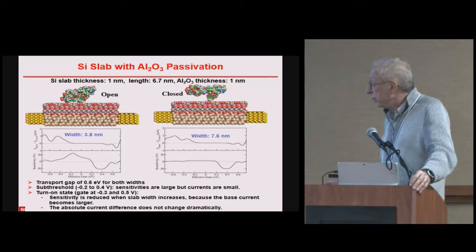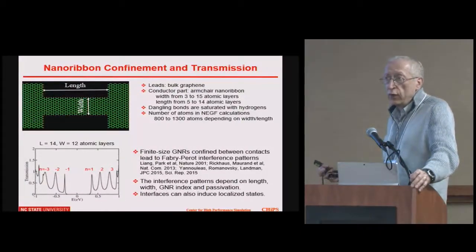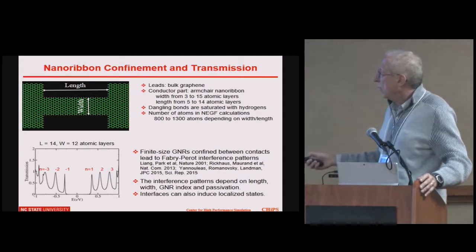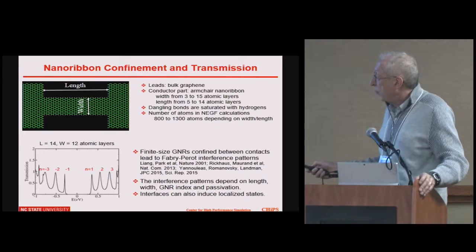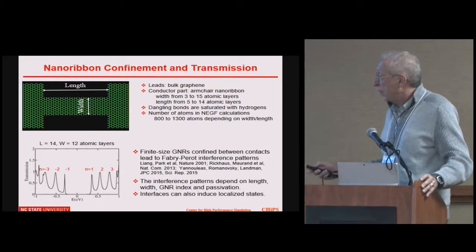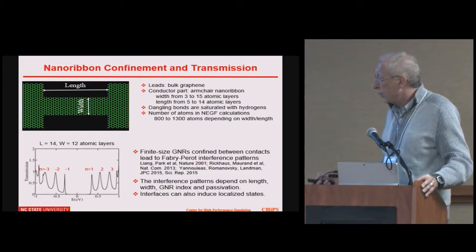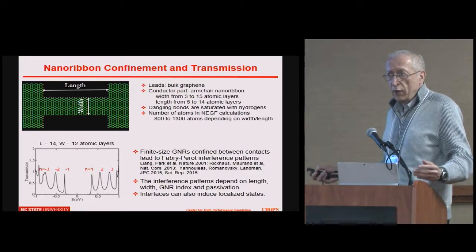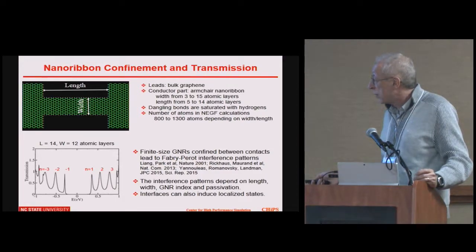Let's turn to example two: working with graphene and nanoscale devices for the post-Moore's law era. We have a simple Gedanken device — a nanoribbon, a ribbon of graphene, connected to two graphene electrodes. If you make something small, and the reason to go to graphene is to make very small devices, it turns out that one has quantum interference patterns: this distance generates standing waves, and there are various quantum numbers that depend on length, width, and index of the graphene nanoribbon. There could also be localized states.